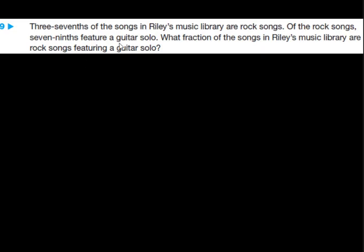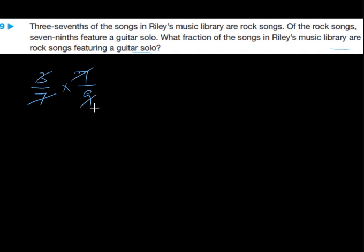The next question: 3/7 of the songs in a music library are rock songs. Of the rock songs, 7/9 feature a guitar solo. What fraction of all songs are rock songs featuring a guitar solo? We multiply both fractions: 3/7 × 7/9. The 7s cancel, and 3 and 9 are in the 3-times table so they cancel giving 1/3. The final answer is 1/3.